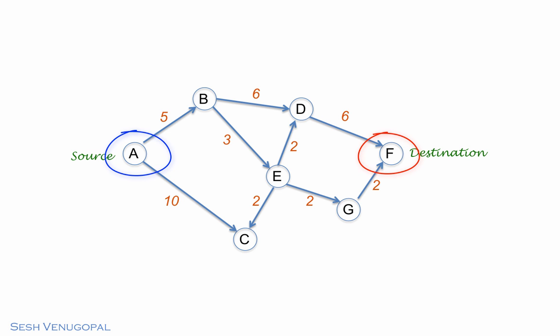There are several paths from A to point F. There is ABDF, there is ABEDF, and there is ABEGF. Now let's look at the lengths of each of these paths. The ABDF path has a total length of 17, obtained by adding the weights of the edges A to B, B to D, and D to F.